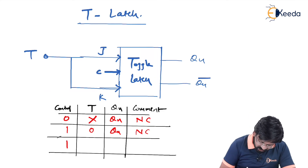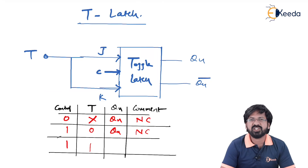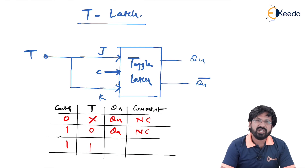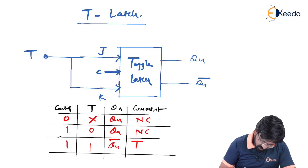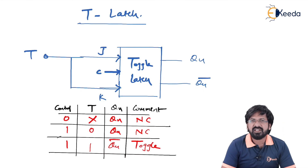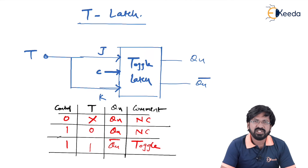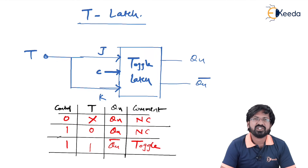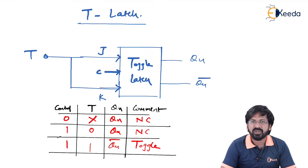When control input equals 1 and T also equals 1, it causes J to become 1 and K also to become 1. When J equals 1 and K equals 1, as we have seen, it is a toggle condition where Qn changes to Qn bar and Qn bar changes to Qn. So when T equals 0 the output is no change, and when T equals 1 the output toggles — 0 becomes 1 and 1 becomes 0. The toggle mode of T latch is enabled only when T equals 1. T latch is derived from JK latch — just short J and K, make a common input, and name that input T. Thank you.